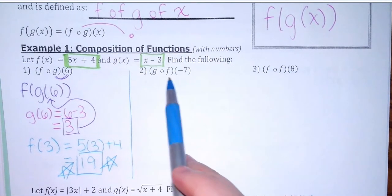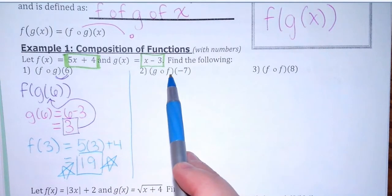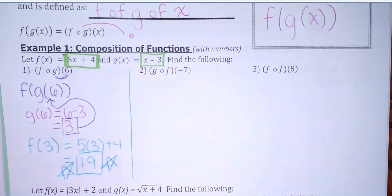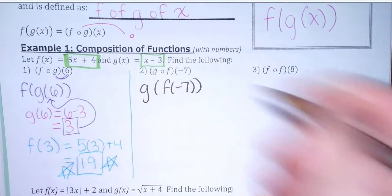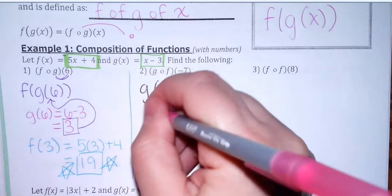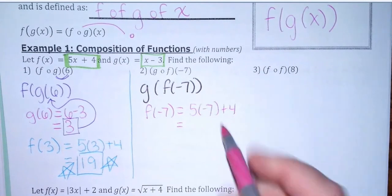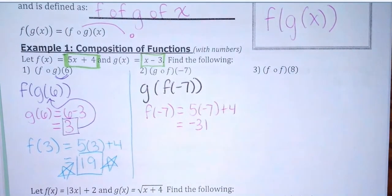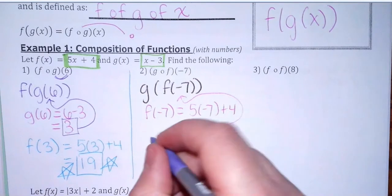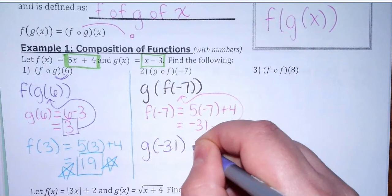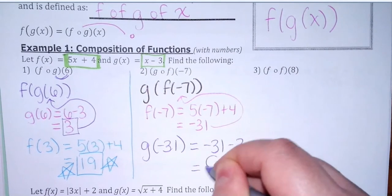If you like this notation, whichever is closer to the number goes first. So I would first plug negative 7 into the f of x function. If you like the other notation, it's g of f of negative 7. We do f with negative 7 plugged in everywhere we see an x: 5 times negative 7 plus 4 is negative 35 plus 4, which is negative 31. Then substitute that into g of negative 31, which is negative 31 minus 3. Final answer is negative 34.